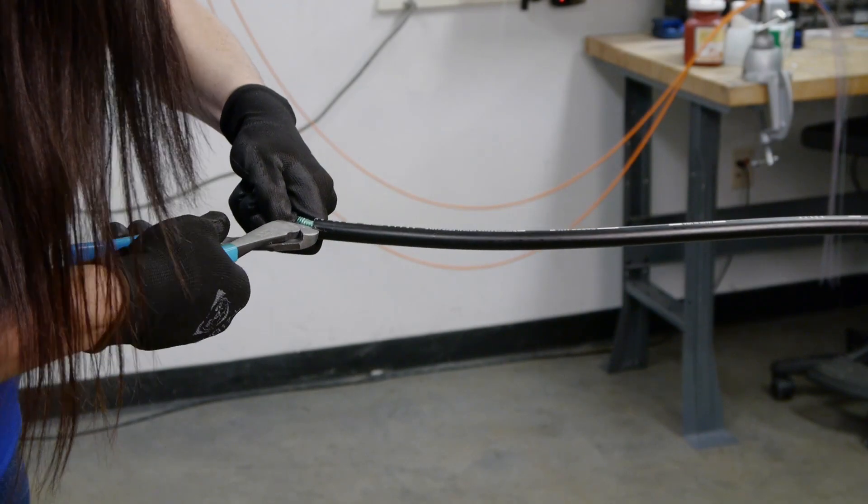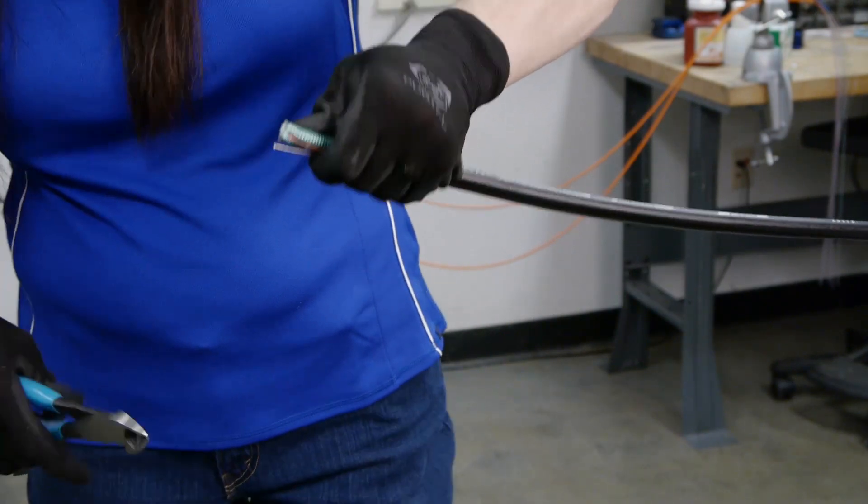With side cutters or splicing scissors, cut a small slit in jacket near the rip cords.